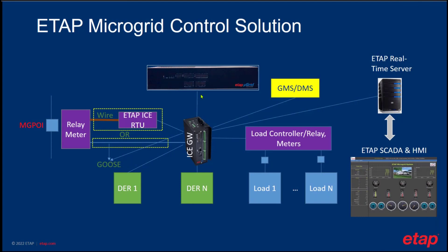The ETAP microgrid control solution has two main components: the microgrid controller on top, and an ICE gateway with a built-in fast simple PLC. The microgrid controller does most of the work. The gateway with its built-in PLC does two important things: first, it converts between different types of protocols for the DERs or assets in the system; and it also supports hardwire or analog channels needed to read the status of circuit breakers, the point of interconnection, and similar signals — providing both Ethernet-based and hardwire connections.